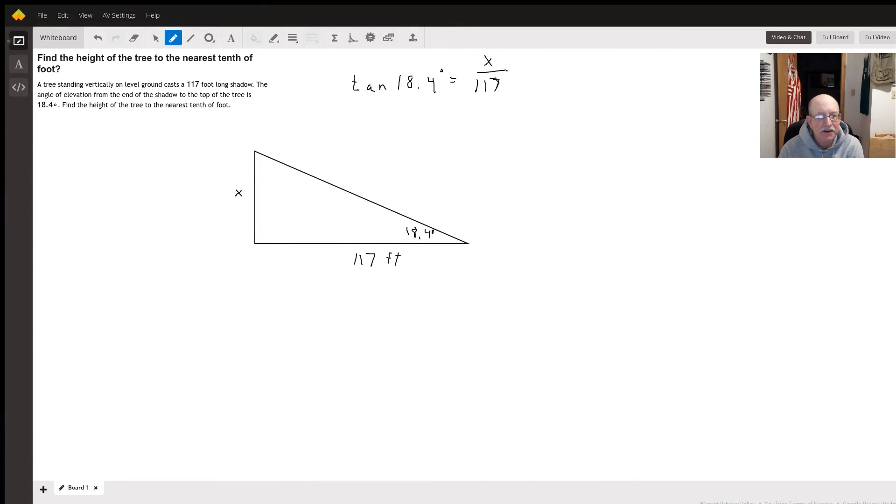We have a tree where x is the height. We have an angle of elevation of 18.4 degrees, so this angle down here is going to be 18.4 degrees.